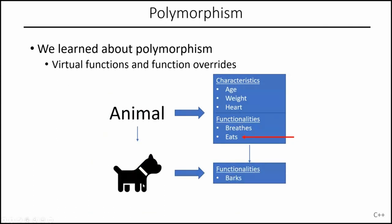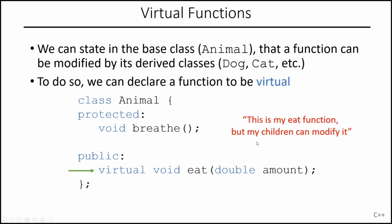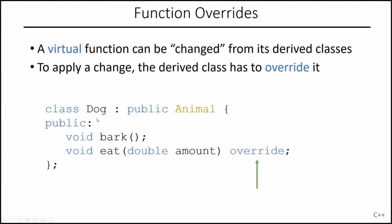We learned about polymorphism: if the dog inherits from animal but wants to be more specific about what a function does, we can make that function virtual in the parent class. The derived classes like dog and cat can then override it. Making it virtual basically means: this is my eat function, but my children can modify it. In the dog class, we redeclare and redefine the eat function marked as override, meaning: don't use my parent's eat function, use mine instead.